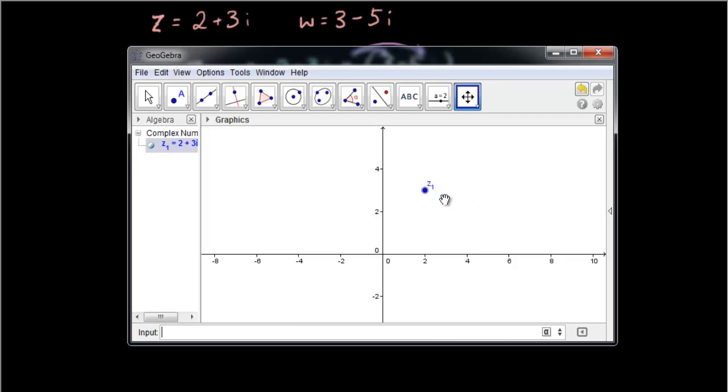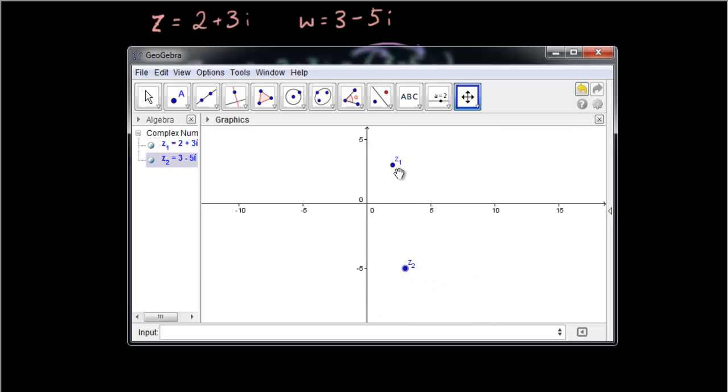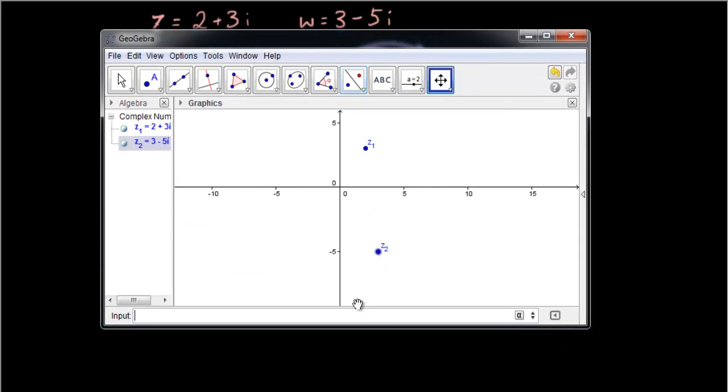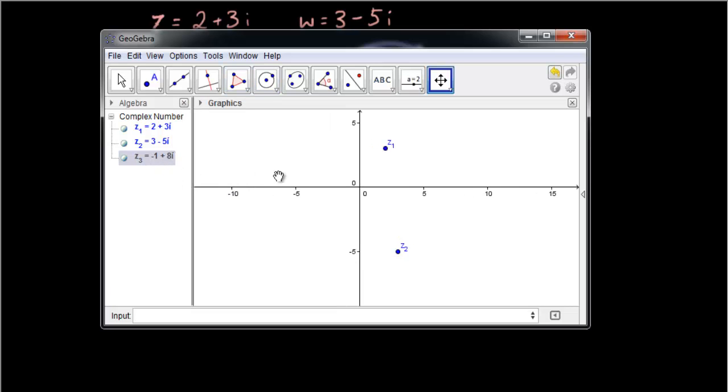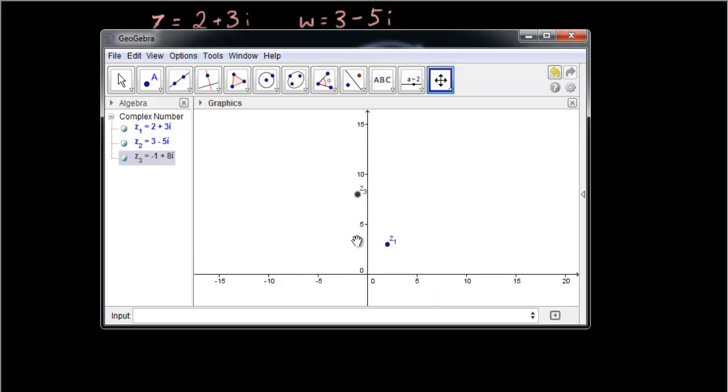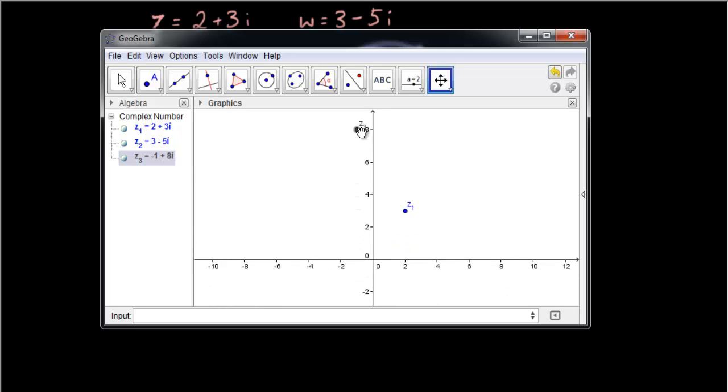And if I type 3 minus 5i, and you can see if I zoom out a bit, it's down here z2. And if I go, z minus w, so z1 minus z2, and you get z3 which is negative 1 plus 8i. As it says, z3 is on the left and you can see z3 is over here.